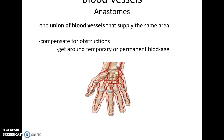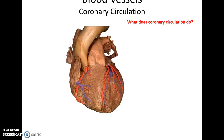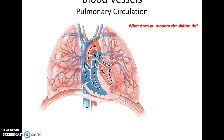Anastomoses are unions of blood vessels — vessels supplying the same area that form a network and transfer blood between themselves. Anastomoses can be useful because they can compensate for obstructions, either temporary or permanent, allowing blood to get around blockages. Coronary circulation provides nutrients and oxygen to the heart itself; pulmonary circulation sends deoxygenated blood to the lungs to become oxygenated.